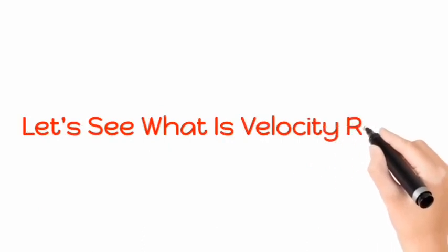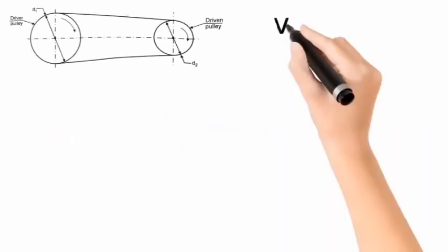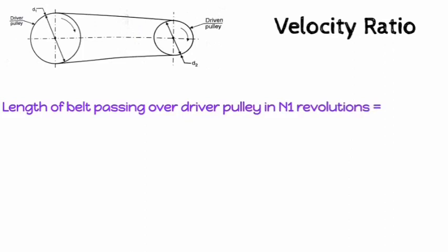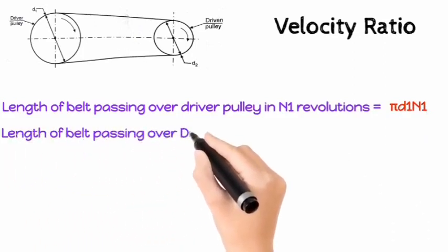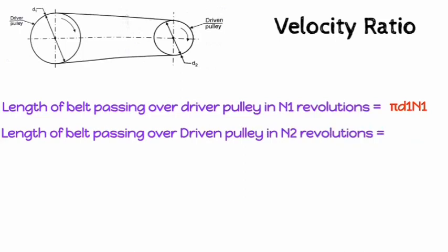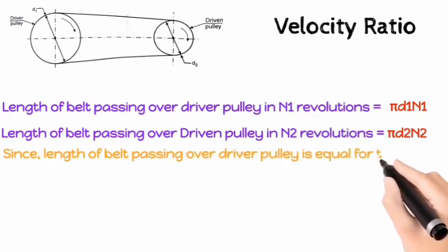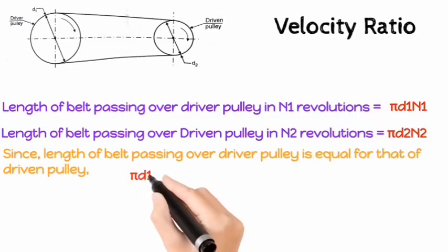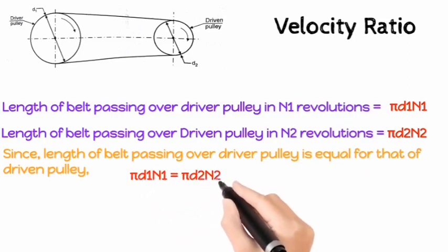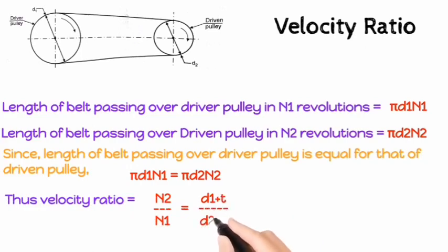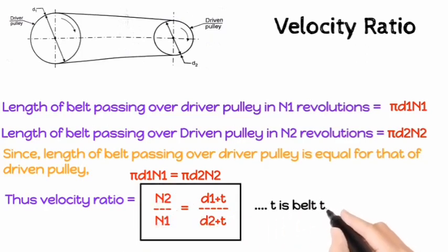Let's see what is the velocity ratio. Velocity ratio. Length of the belt passing over the driver pulley in n1 revolutions is equal to pi d1 n1. Since length of belt passing over driver pulley is equal to that of driven pulley, we have pi d1 n1 is equal to pi d2 n2. Thus, velocity ratio is equal to n2 upon n1 is equal to d1 plus t upon d2 plus t. Here, t is the belt thickness.